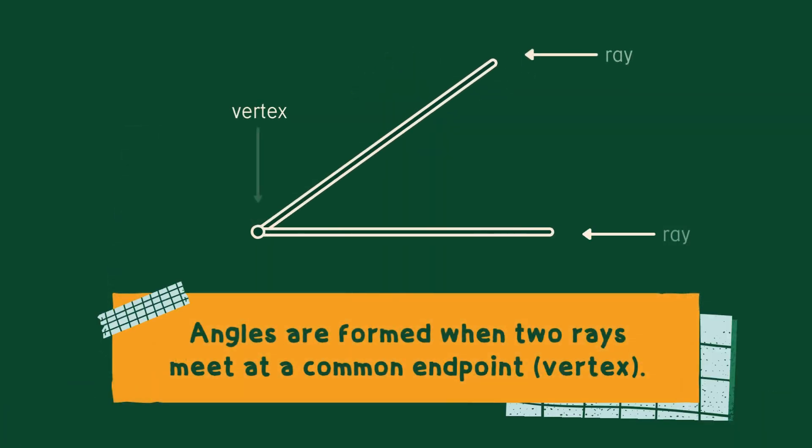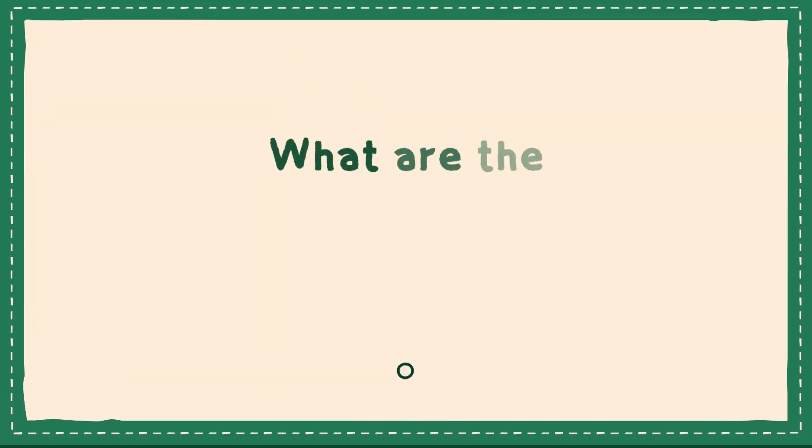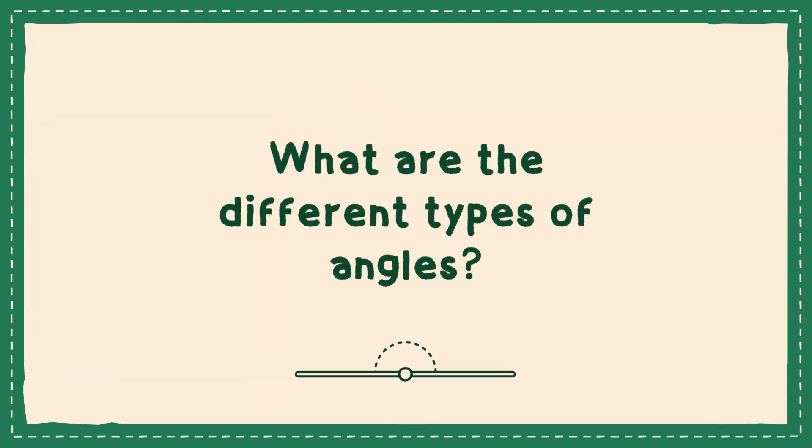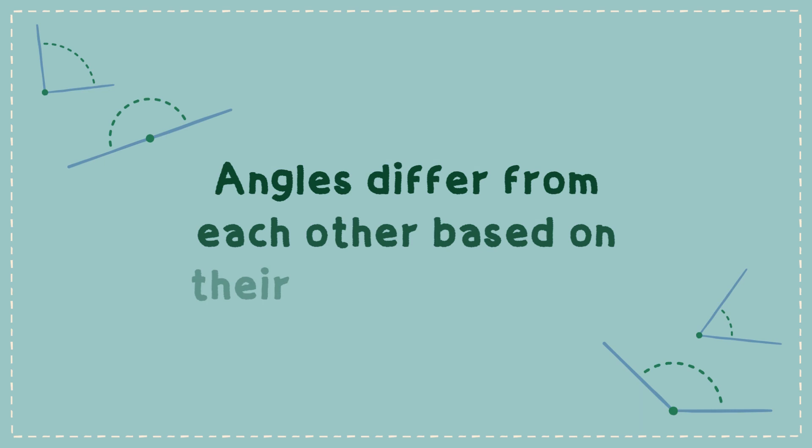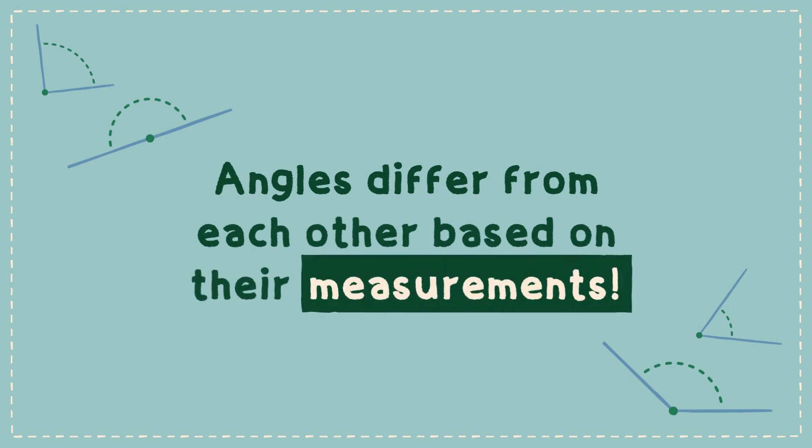Angles are formed when two rays meet at a common endpoint. There are different types of angles. They differ from each other on the basis of their measurements.